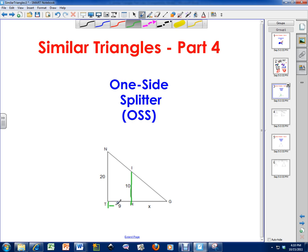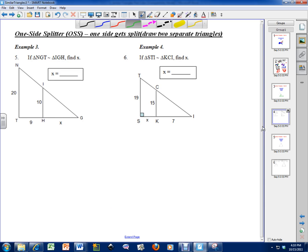So this segment right here is 9, and this segment right over here is X. They are two separate segments here. I've got this problem on the next page, so I'm going to solve it over here. So it says one-side splitter, one side gets split. So I'm going to tell my students to draw two separate triangles here.